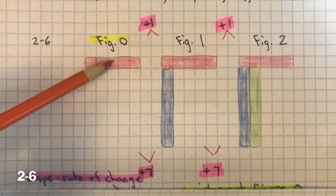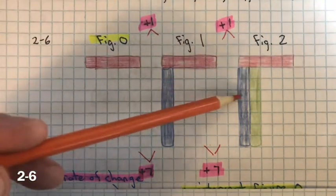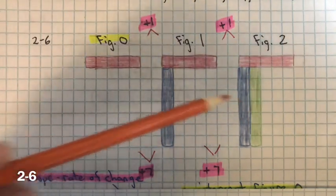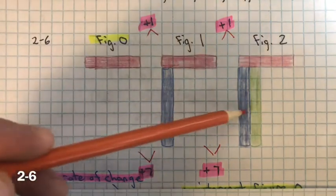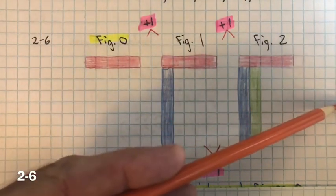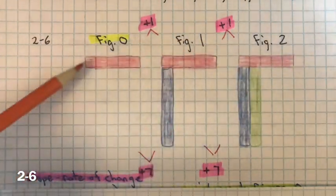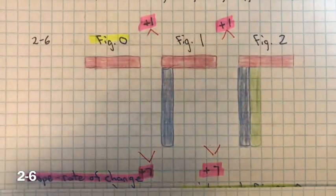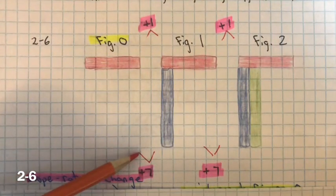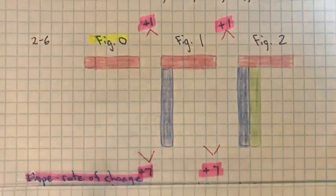So that's 5, then 5 plus 7, then 5 plus 7 plus 7. Here you're multiplying 7 by the figure number: 7 multiplied by 1, 7 multiplied by 2. Figure 3 would have 7 multiplied by 3. And you always have the first 5 — that's the initial value, what you started with. So the rate of change is increasing by 7 for every figure number.